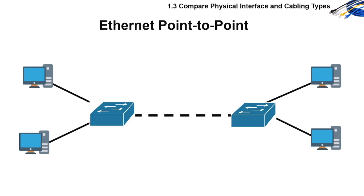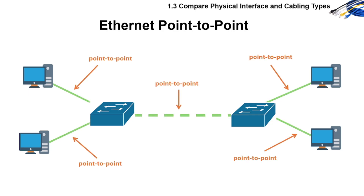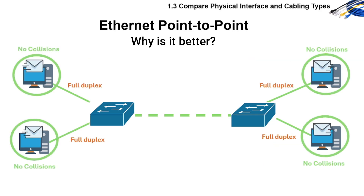Let's now review Ethernet point-to-point. It is a dedicated link between two network devices. No other devices share this link — like a one-on-one private phone call with no one else interrupting — and this is the standard today. Why is point-to-point better? Because there are no collisions. It uses full duplex, which can send and receive at the same time, and it's faster and more secure.